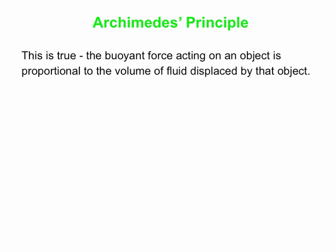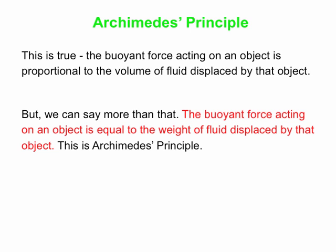So that's a nice qualitative statement, but we can also make a much stronger statement than that. This is really what Archimedes Principle is about: the buoyant force acting on an object is equal to the weight of fluid displaced by that object. Of course, the weight of fluid displaced is proportional to the volume of fluid displaced, but here we really get an equal sign. Buoyant force is equal to the weight of fluid displaced by the object. That's Archimedes Principle stated in words.